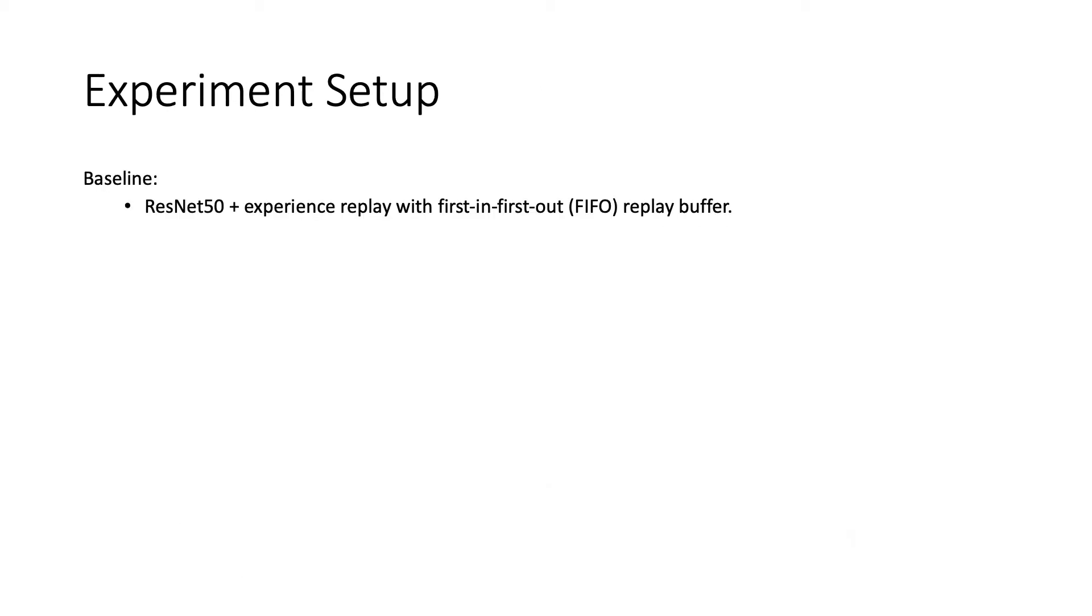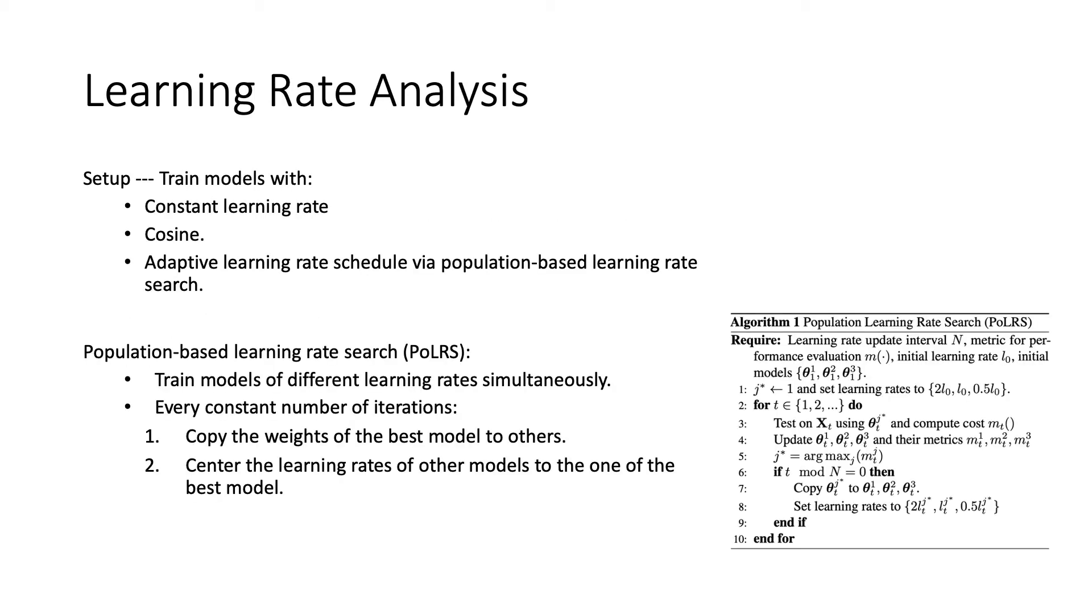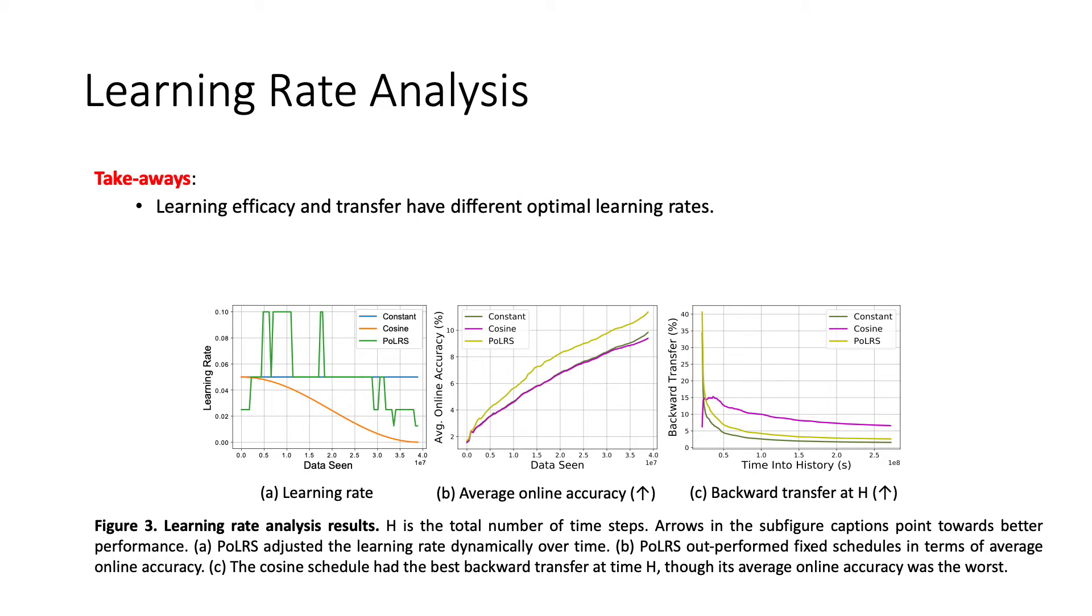We used ResNet50 with experience replay as the baseline for our study and analyzed three major optimization components of online continual learning. In the learning rate analysis, we train our baseline model with different learning rate schedules, including the constant schedule, cosine schedule, and adaptive learning rate schedule via population-based search. We observed that the ideal learning rates for learning efficacy and transfer are different. Specifically, the adaptive learning rate schedule produced by population-based search is more suitable for learning efficacy. If transfer is prioritized and there is a predefined training horizon, the cosine schedule is better.